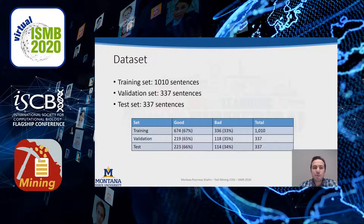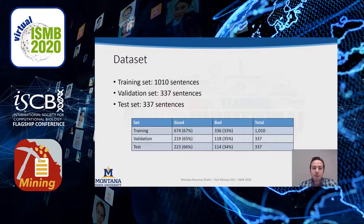We manually annotated additional sentences and created training, validation, and test sets. The training set has 1,010 sentences and the validation and test sets have 337 sentences each. Obtaining labeled data is time and resource consuming, but in the PP-PREP study we observed that unlabeled data has a positive impact on our results, so we want to take advantage of it.